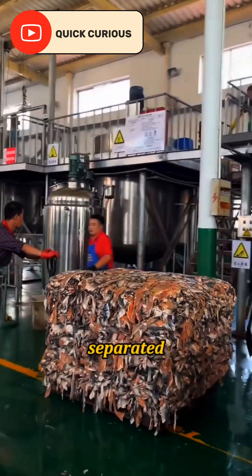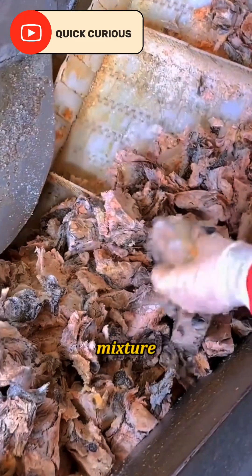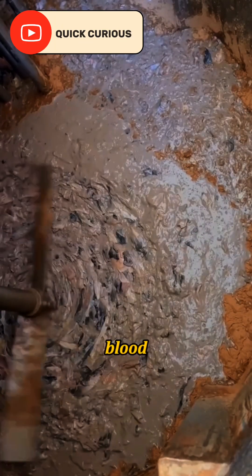First, the waste is separated and ground into a sticky, foul-smelling mixture, filling the air with the stench of blood and rot.